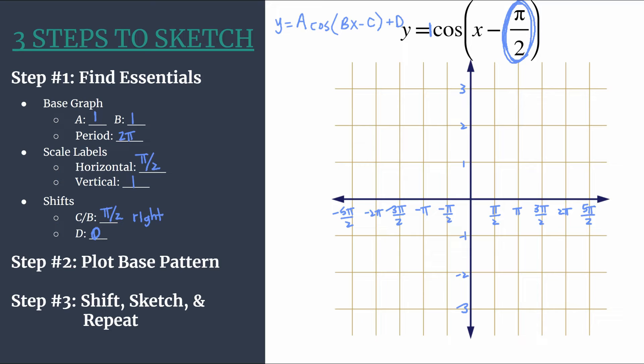Plot the base pattern, and now we notice that this cosine is not reflected, so we can use the base pattern max zero min zero. We're going to plot this lightly because we know we're going to shift it in step three.